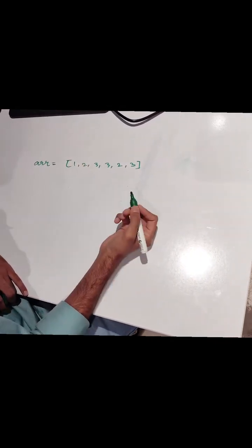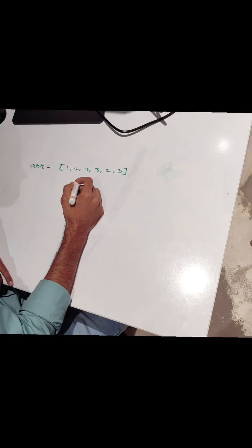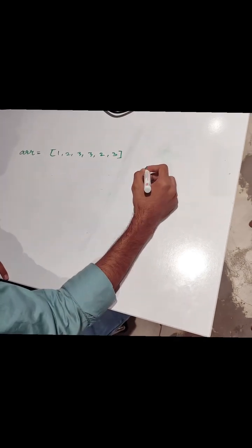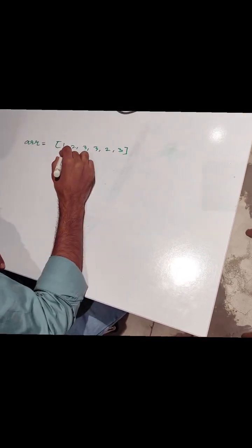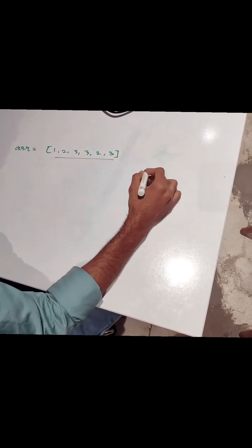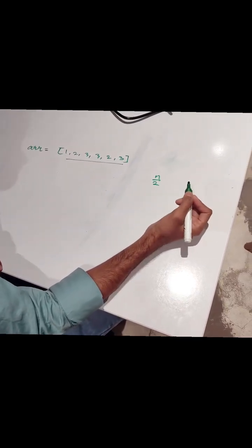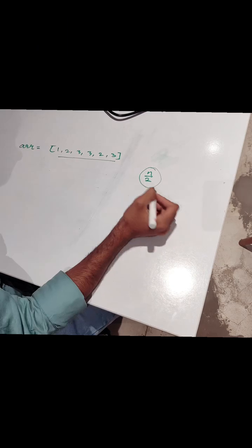So Shijan, now we have a question to solve. Find the majority element from the array. This means there will be one element in this array which appears more than n by 2 times. So we have to find out that element and return that element.